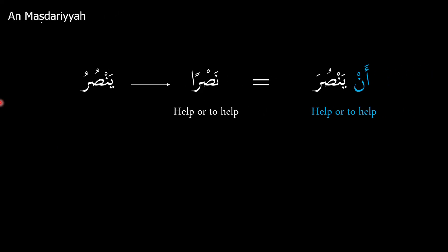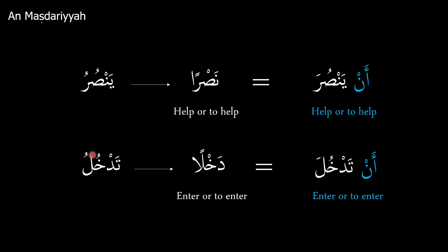Let's take a look at an-mastariyya. If we have a present tense verb such as yansuru, which means 'he helps' or 'he is helping,' the masdar of it would be nasuran, meaning 'help' or 'to help.' What an-mastariyya does — and it's there in the name — is take the present tense verb that comes after it and give it its masdar meaning. So an-yansura will mean 'help' or 'to help,' equivalent to nasuran. Similarly, tadkhulu ('she enters') becomes dakhlan, equivalent to an-tadkhula, meaning 'enter' or 'to enter.'